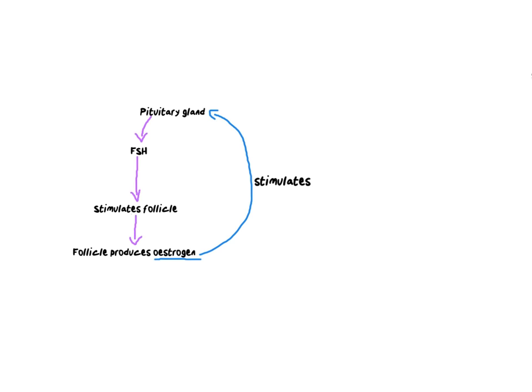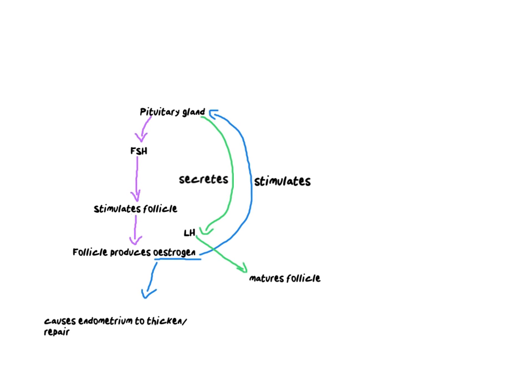Estrogen stimulates the pituitary gland to start secreting luteinizing hormone. That LH comes from the pituitary gland and is sent to the follicle — because the purpose of luteinizing hormone is to mature and grow the follicle. At the same time, estrogen is also affecting the uterine cycle: it is causing the endometrium to thicken and repair itself, because we would have lost this layer during menstruation.